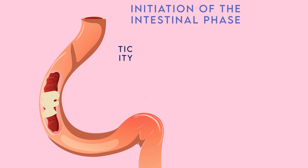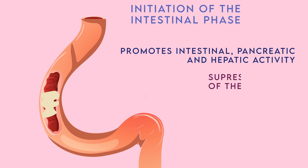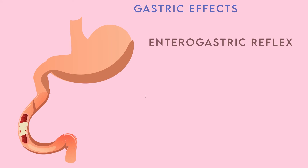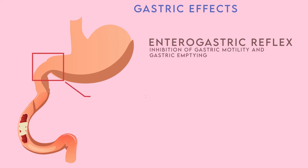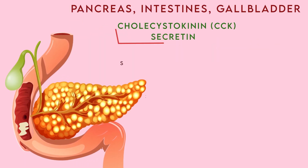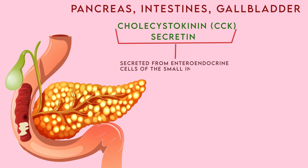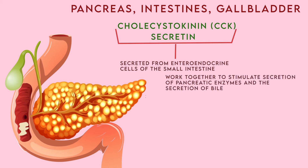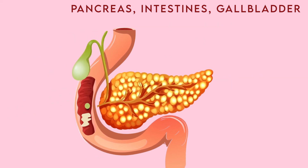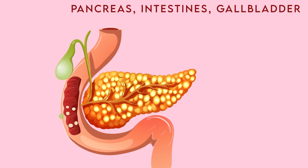This phase promotes intestinal, pancreatic, and hepatic activities while suppressing the activity of the stomach. First, the enterogastric reflex leads to inhibition of gastric motility and gastric emptying through closing the pyloric sphincter. Second, two digestive hormones — cholecystokinin (CCK) and secretin — are secreted from enteroendocrine cells of the small intestine. These hormones work together to stimulate the secretion of pancreatic enzymes and secretion of bile from the gallbladder, which was originally produced by the liver. In the small intestine, bile emulsifies lipids in the chyme, breaking them up into numerous small fatty globules available for digestion.